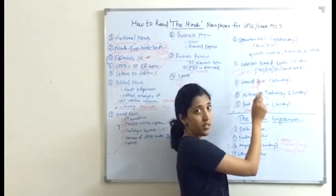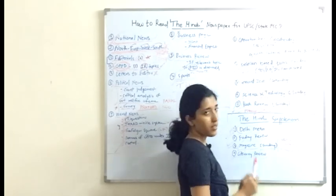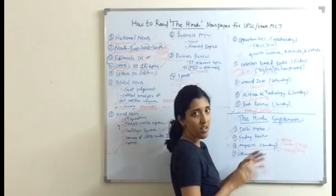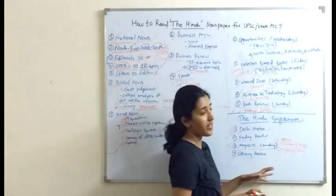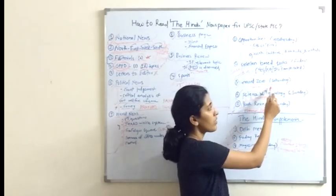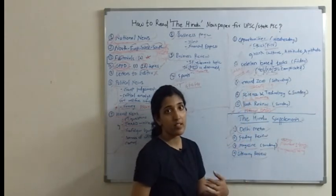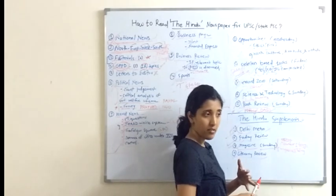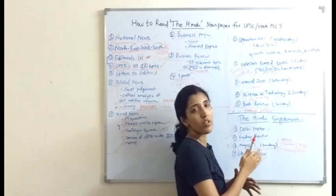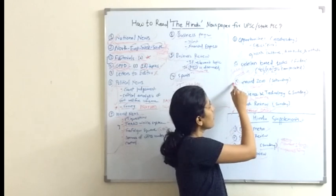The next section is Ground Zero, which comes on Saturday. This section covers one topic thoroughly — on one page, one topic is discussed in great detail. This is particularly useful for writing essays; you will get a lot of examples. Topics covered include the Kerala disaster, social and legal practices still continuing in India, and malnutrition. It really goes into the details of the topic, so it is very important and you should give it a read.